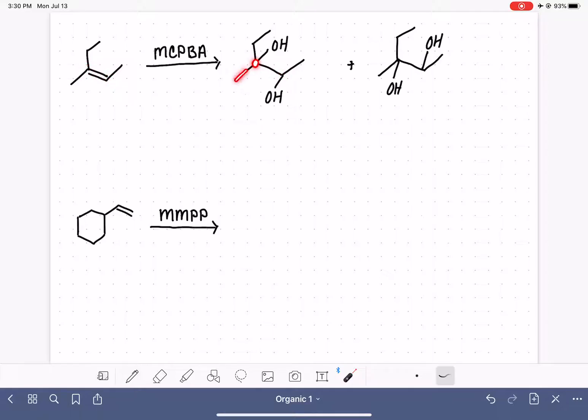This carbon has a methyl, an ethyl, an OH group, and other stuff. So this carbon is chiral. This carbon has a methyl, a hydrogen, an OH, and this stuff. So they're both chiral.